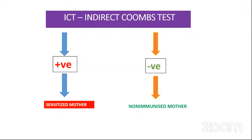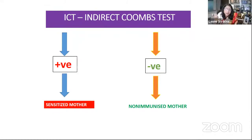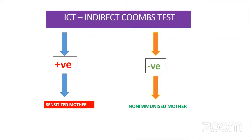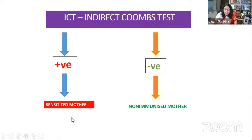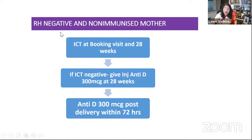If wife is negative and husband is positive, we do the indirect Coombs test. If the indirect Coombs test is negative, the mother is non-immunized. If she is positive, she is a sensitized mother.